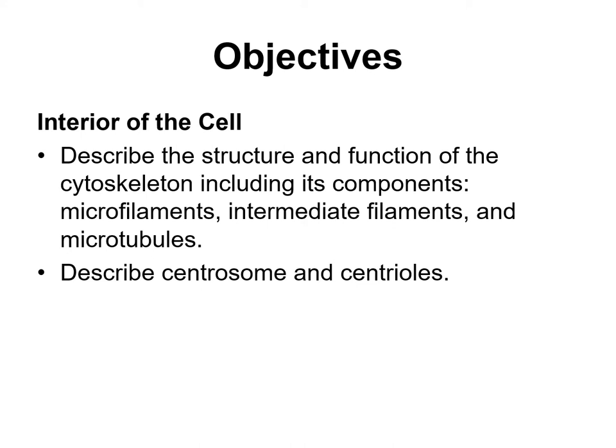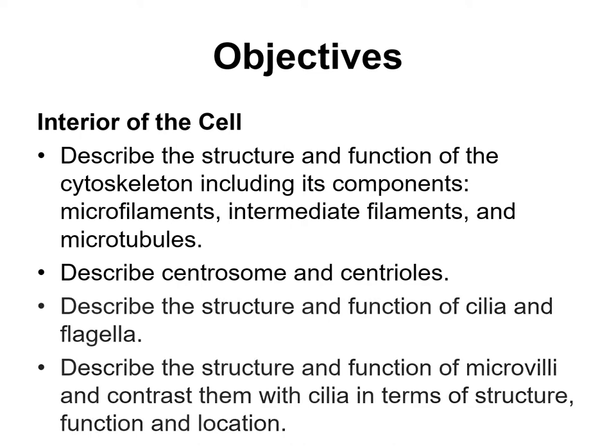Let's move on to talk about a few other specialized organelles as well as some extensions of the plasma membrane. The learning objectives are: describe the structure and function of the cytoskeleton, including its components — microfilaments, intermediate filaments, and microtubules; describe centrosome and centrioles; describe the structure and function of cilia and flagella; and describe the structure and function of microvilli and contrast them with cilia in terms of structure, function, and location.